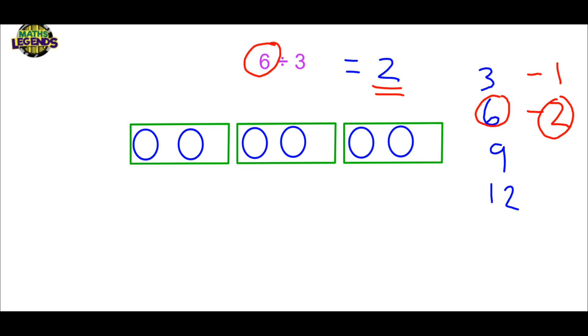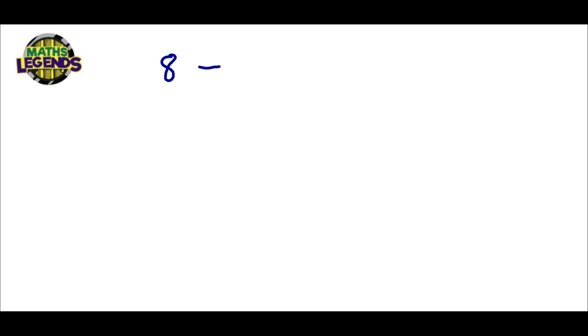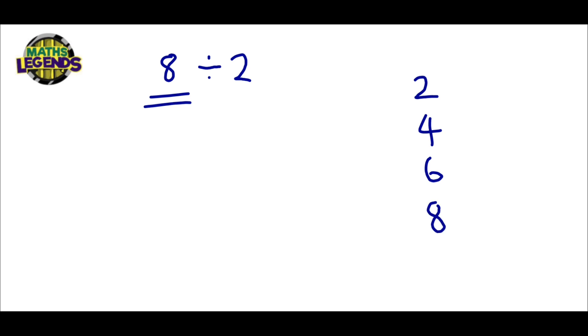Let's look at another example: eight divided by two. We can use the two times tables because we're dividing by two: two, four, six, and we continue until we get to eight. There we go, we've reached eight. We have four numbers written down, so the answer here is four.